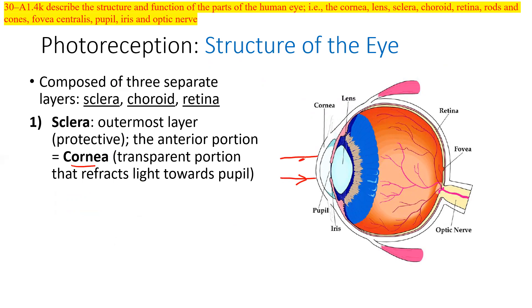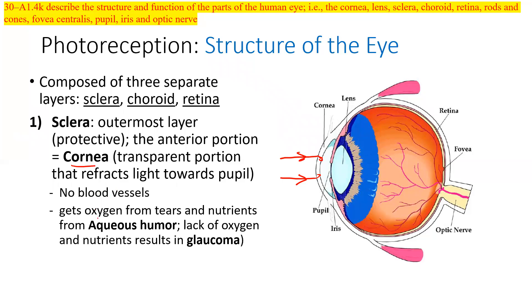It's going to be the first portion that's actually going to bend light. Once rays come in, they're going to bend just slightly here in the cornea. There's no blood vessels and oxygen from tears and nutrients from aqueous humor. That's how it gets its oxygen from tears and nutrients from aqueous humor. Lack of oxygen nutrients results in glaucoma.